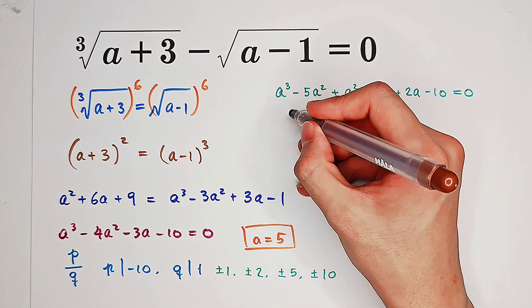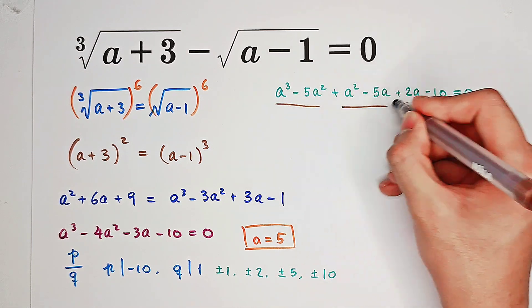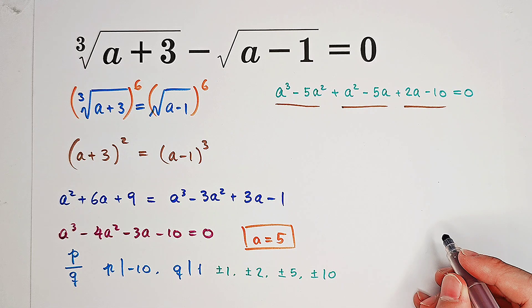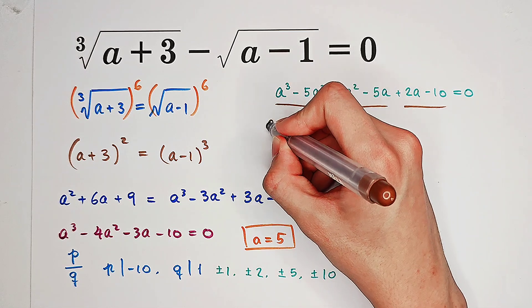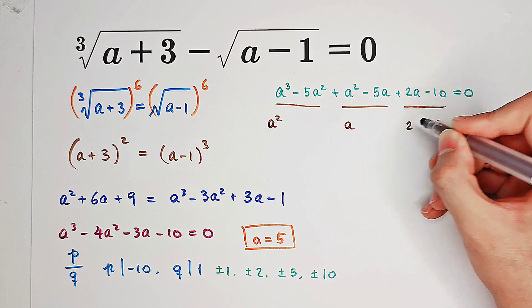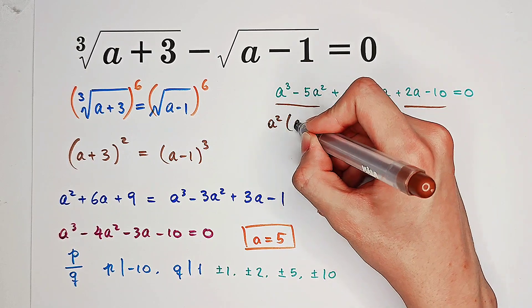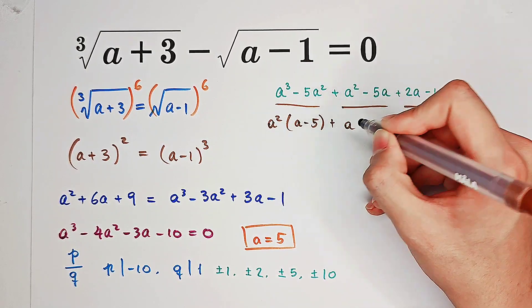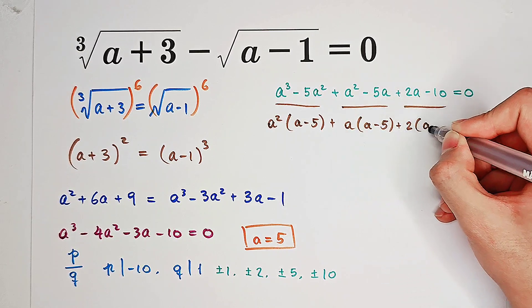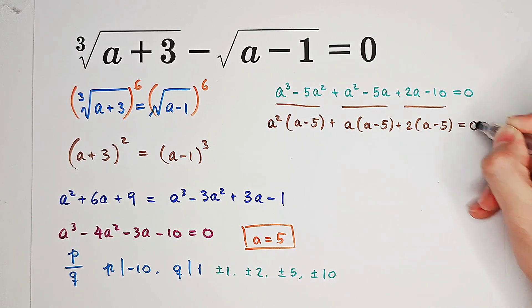What will happen is from these three sections, we can take out a squared, a, and 2. And here we get a squared times a minus 5, a times a minus 5, 2 times a minus 5 equals 0.